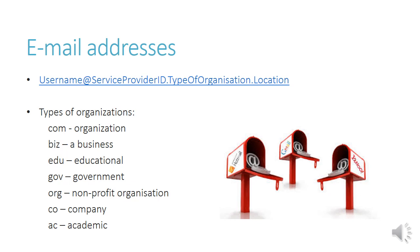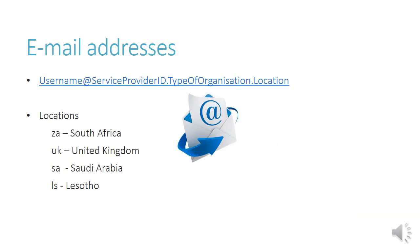If you look at an email address, there's a lot you can tell from it. The type of organization is shown just before the last dot: .com is an organization, .biz is a business, .edu stands for educational, .gov is government, .org is a non-profit organization, .co is a company, and .ac is academic. The last item in the email address is the location — for example, ZA is South Africa, UK is United Kingdom, SA is actually Saudi Arabia, and LS is Lesotho. You also get a lot of emails from FR, which is France.